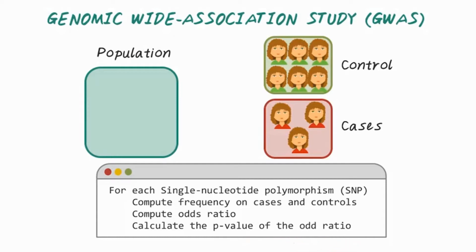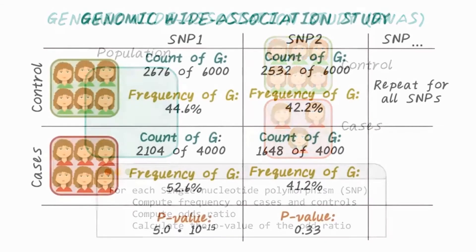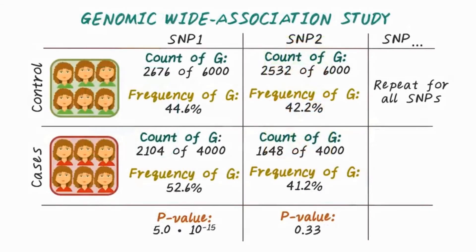From there, we can calculate the corresponding p-value for the odds ratio. If the p-value is small, then we conclude this variation is significant. The associated genetic variations can serve as powerful pointers to the region of the human genome that may cause the disease.